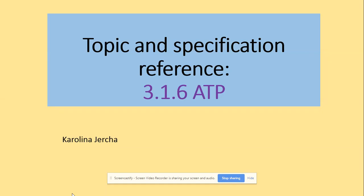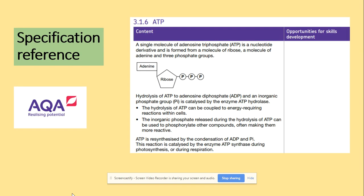Hi guys, welcome to ATP. In terms of the specification, we need to be aware of the structure of adenosine triphosphate as shown per diagram: adenine base, ribose pentose sugar, and free phosphates. We will be looking at the hydrolysis and synthesis of ATP and also at the function of ATP. There are plenty of questions asking about ATP all the time — you can always refer to ATP in your essays as well.